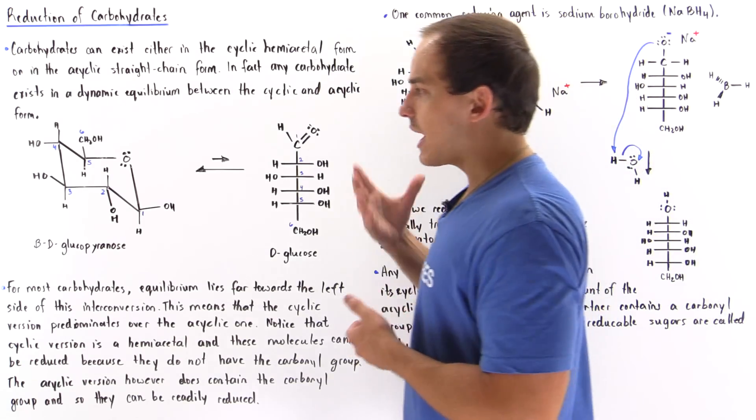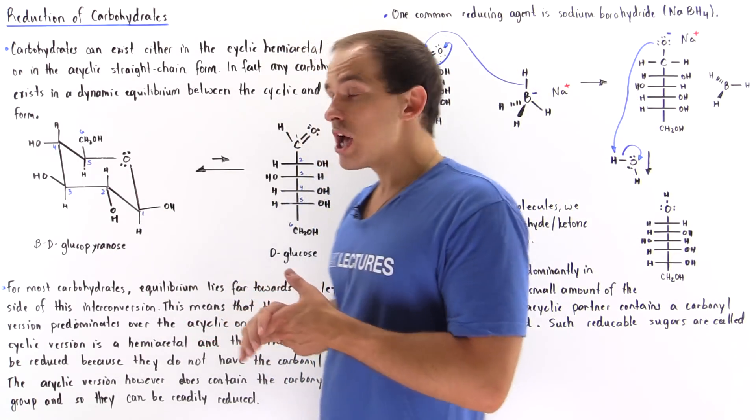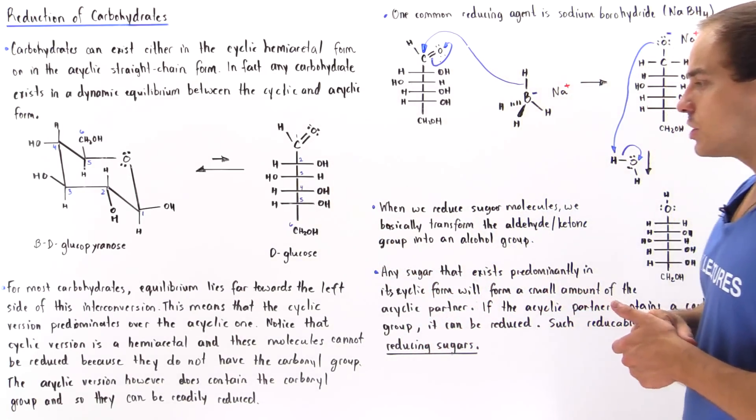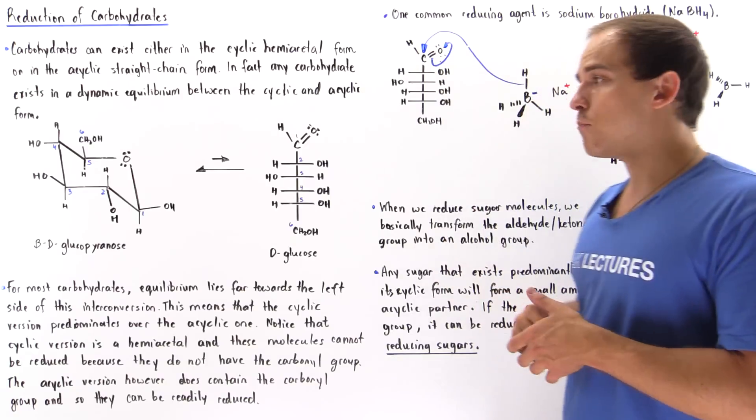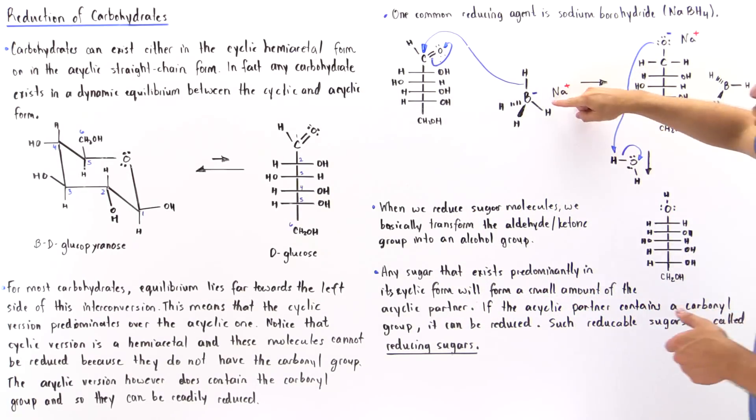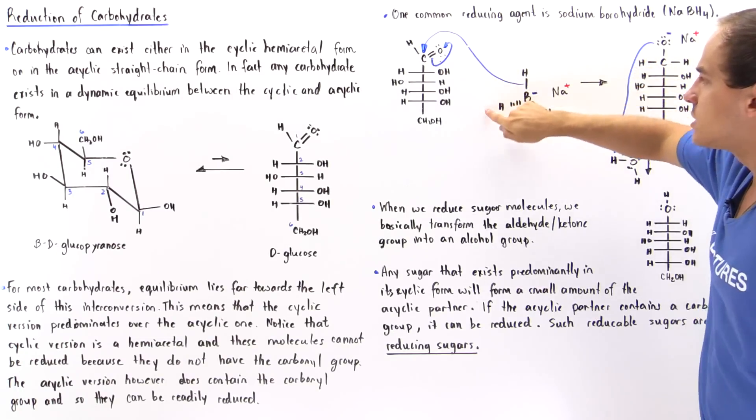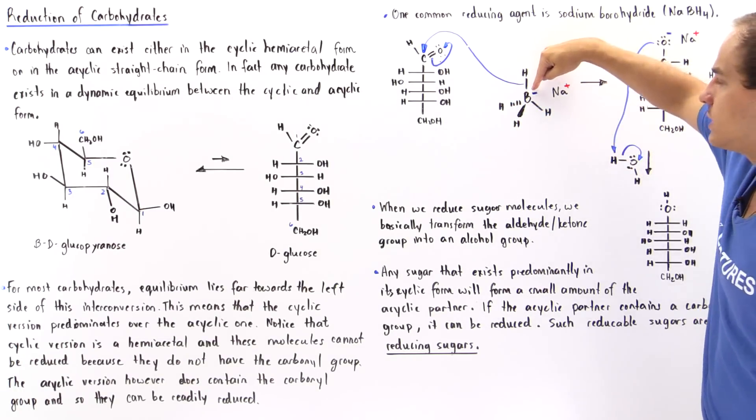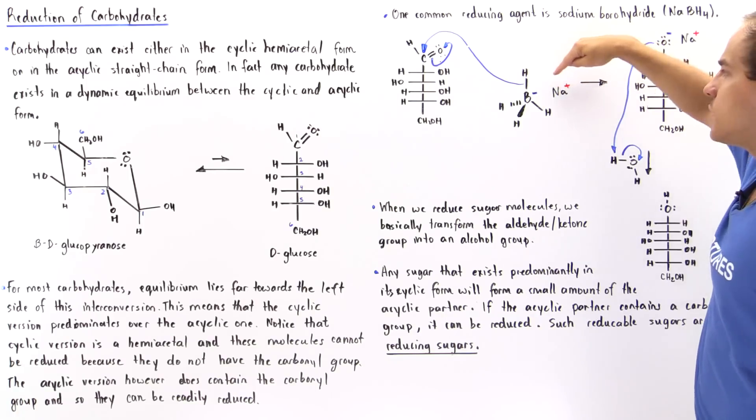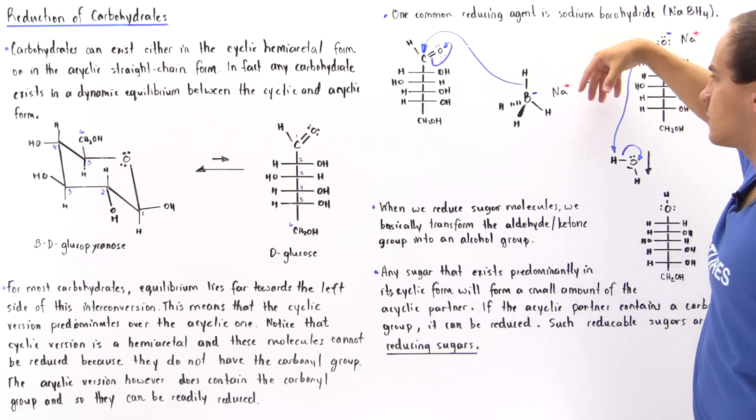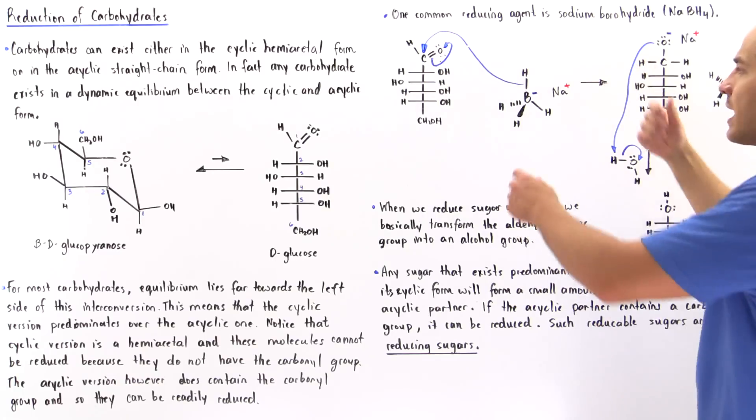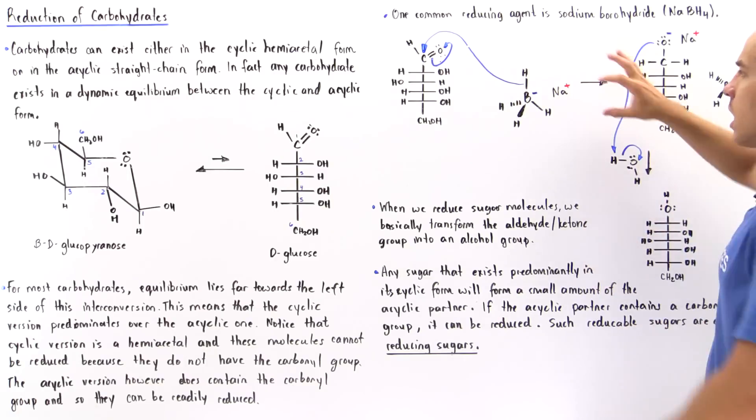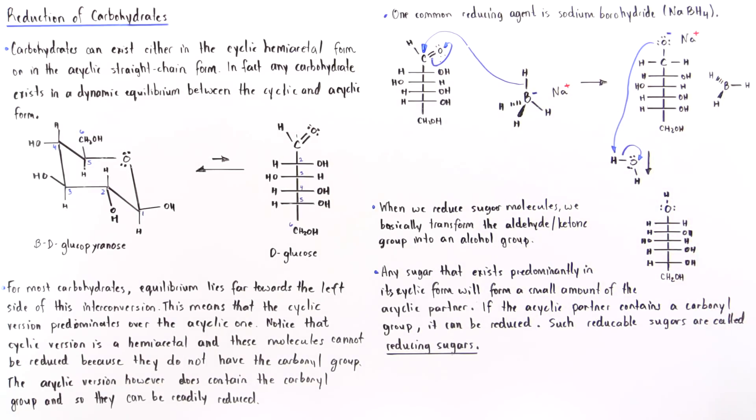Now what exactly is the reaction mechanism by which our open molecule, the acyclic version, undergoes our reduction reaction? Let's use sodium borohydride as our example. Sodium borohydride looks something like this. Notice we have the boron attached to four H atoms, so it contains a negative charge. The sodium, which contains a positive charge, will basically be found in close proximity because we have electrostatic attraction between the negative charge on the boron and the positive charge on our sodium.